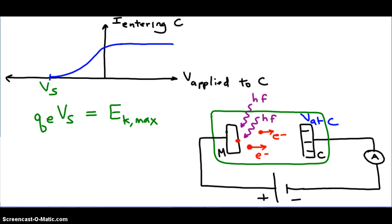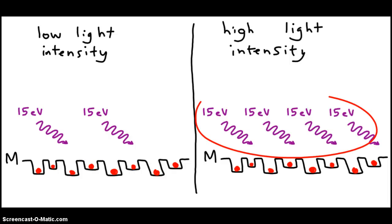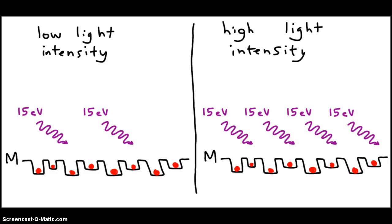So what's the impact of intensity on the graph? The intensity of light indicates how many photons strike the surface per second. Low intensity means a smaller number of photons striking a particular area per second; high intensity means more photons striking that same area per second. So if there are more photons that strike, then there will be more electrons ejected — the higher the light intensity, the larger the photocurrent.